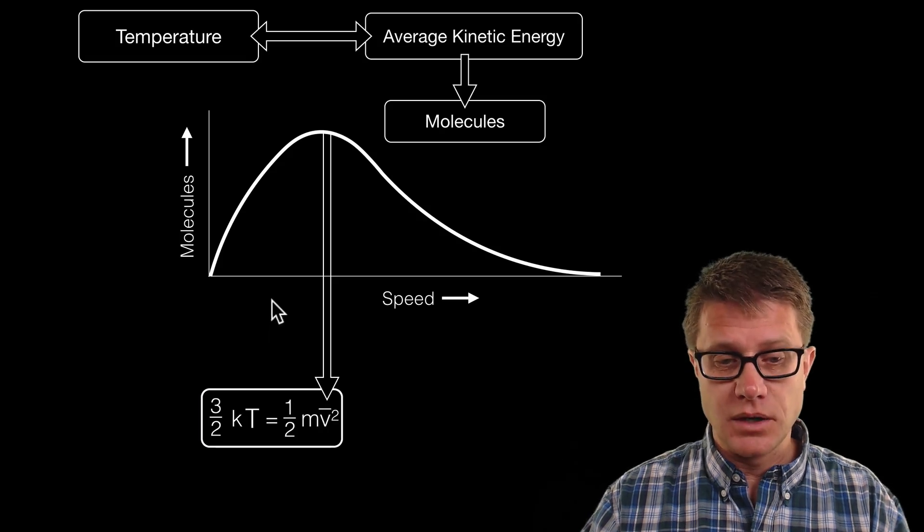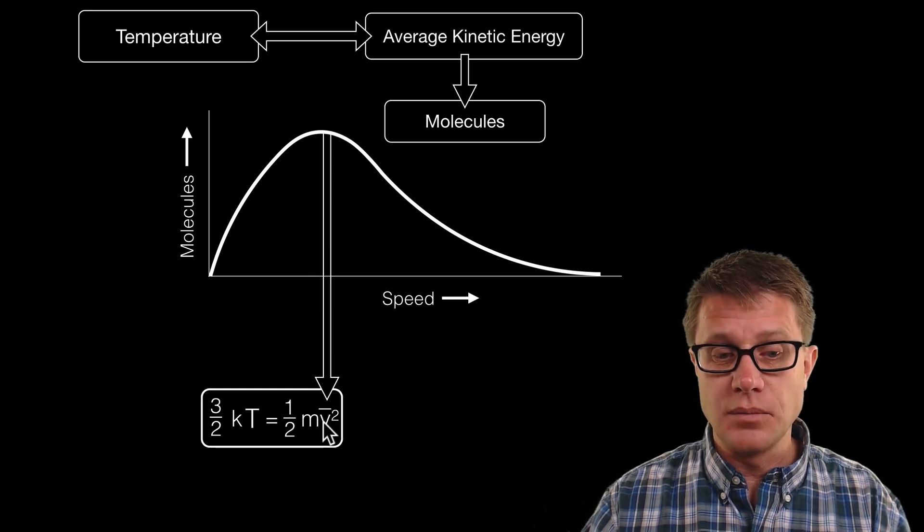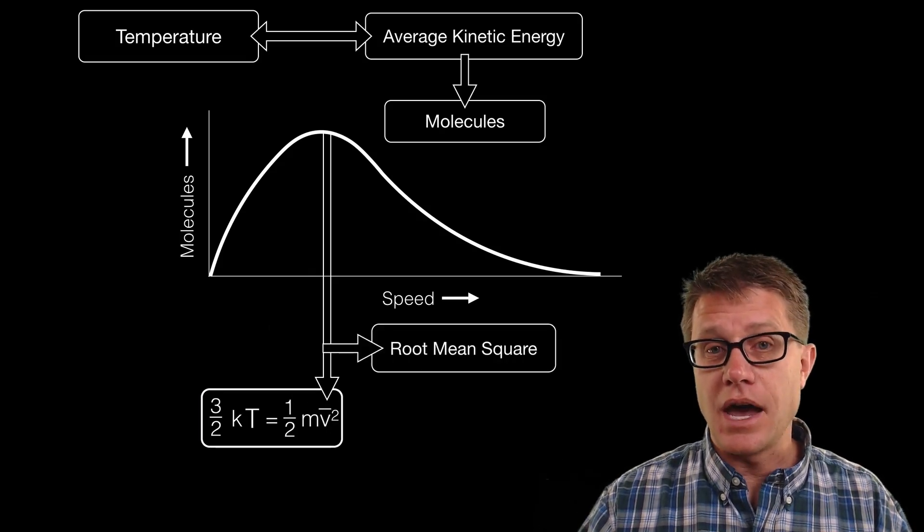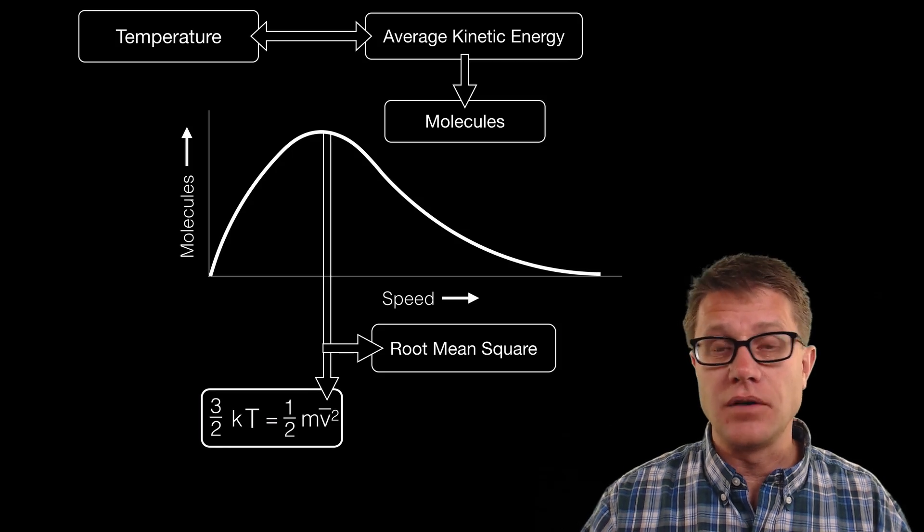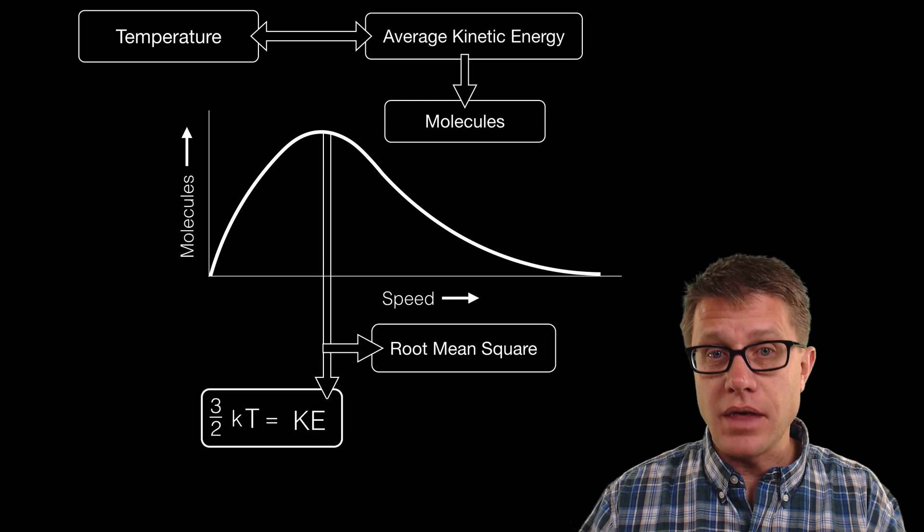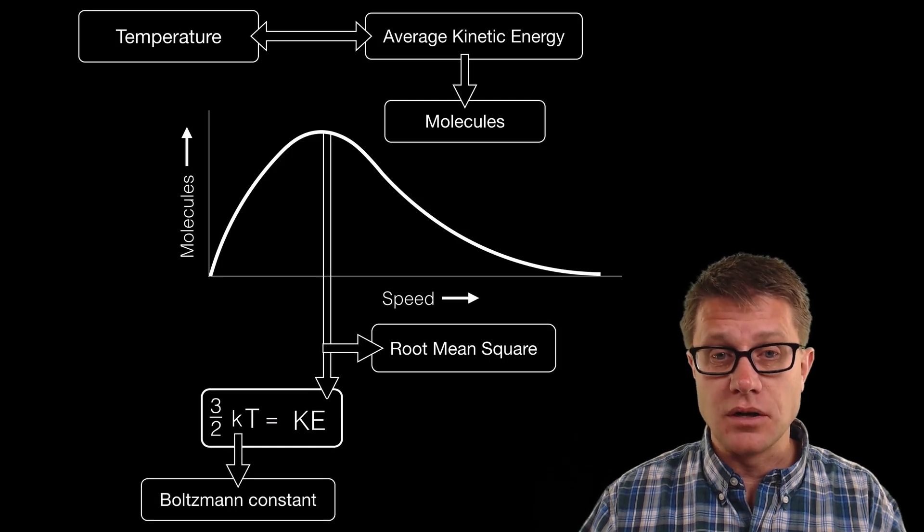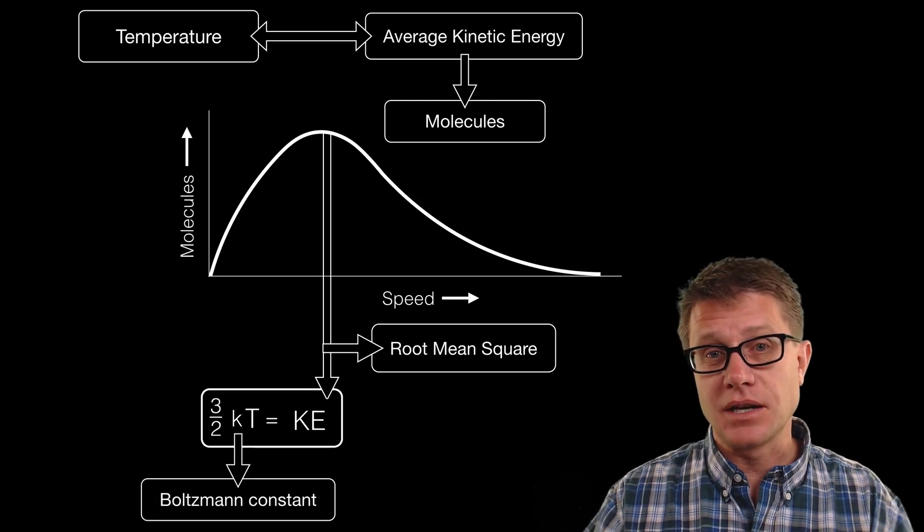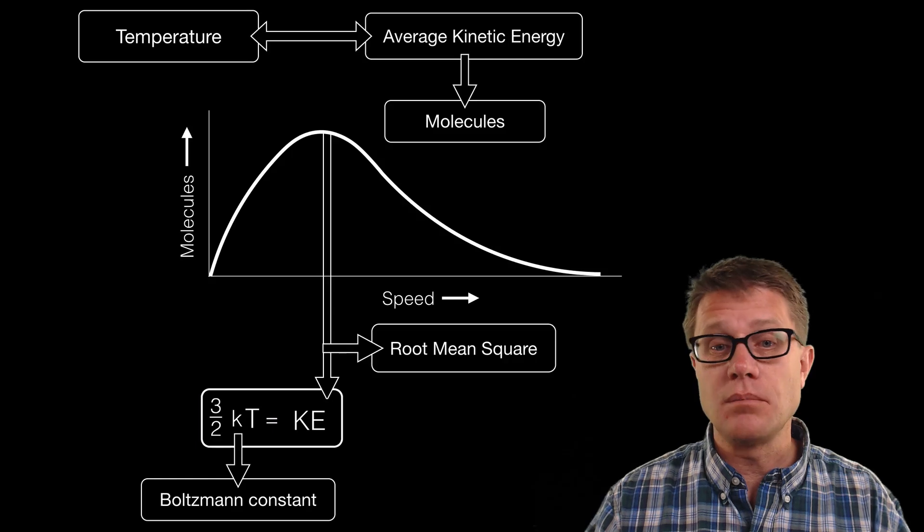So here is our formula again. What is this? This is going to be the root mean square which is going to be the average velocity of all of those molecules. And so what we can do is if we know that value, know the temperature in Boltzmann's constant, we can figure out the kinetic energy of even one molecule.